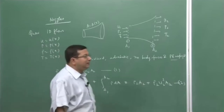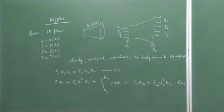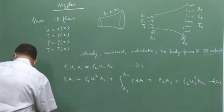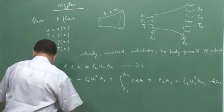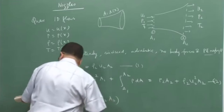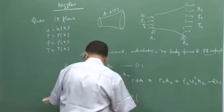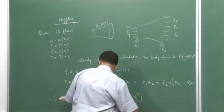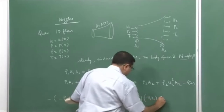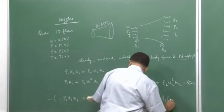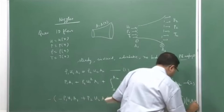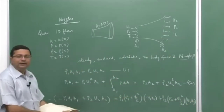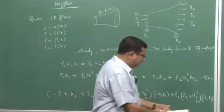Then we started discussing the energy equation. Till the end of last class, we had derived the energy equation for this control volume. We showed that the energy equation would be p2 u2 A2 = ρ1(e1 + u1²/2) u1 A1 + ρ2 u2 A2. We proved this up to the end of last lecture. Now let us continue and simplify the energy equation further.